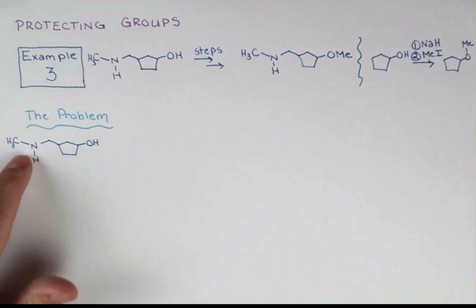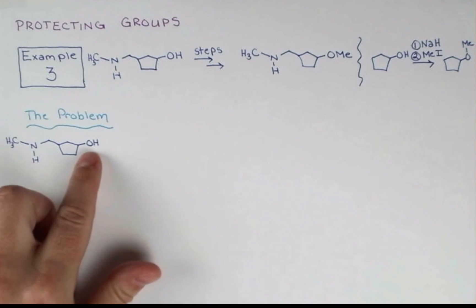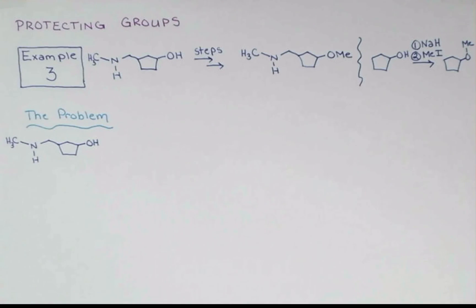So what's the problem with having the nitrogen on there? Well, amines are great nucleophiles. So in the presence of iodomethane, the nitrogen would be more likely to attack, becoming alkylated, than the OH group. But over here we talked about deprotonating this. So maybe we could just deprotonate with sodium hydride, and then we'd have an alkoxide, which is nice and nucleophilic, and maybe we could solve our problem that way. Let's see what would happen if we tried that.